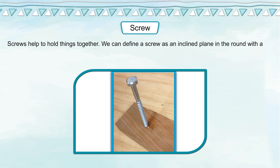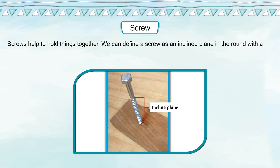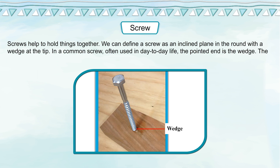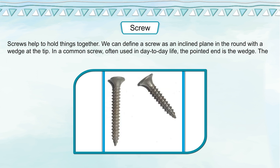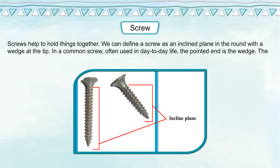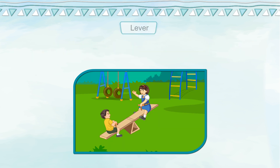Screw: Screws help to hold things together. We can define a screw as an inclined plane in a round with a wedge at the tip. In a common screw often used in day-to-day life, the pointed end is the wedge. The thread that wraps around the screw is the inclined plane.